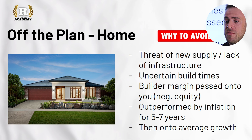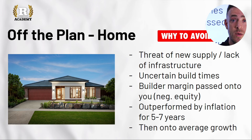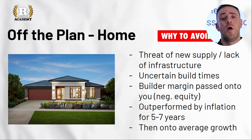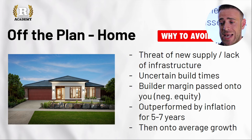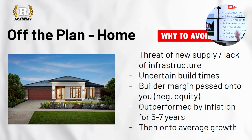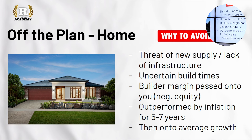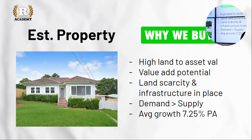If you forgo four percent capital growth for the next seven years on a $500,000 asset, you're giving up a minimum of $20,000 per year — that's $140,000 of growth thrown out the door, all for a couple of grand in depreciation. For me it's almost as bad as an apartment at the beginning. They do turn okay after that period, but it's still a no-go for me.